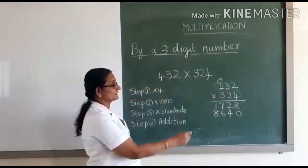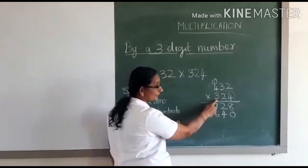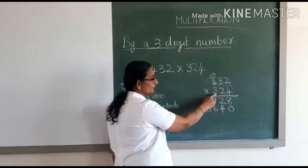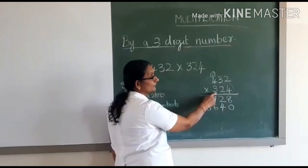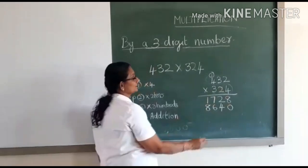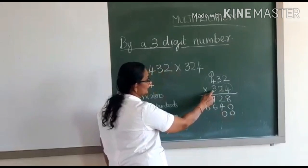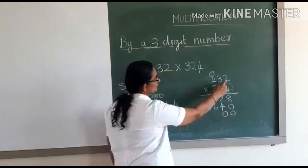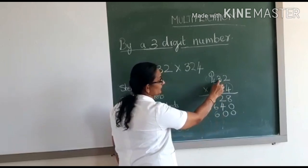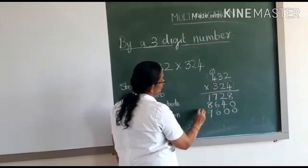The third step is to multiply the number with three. But three is in the hundreds place. When you multiply a number with hundreds, you know that the digit in the ones and tens place is always zero. So put two zeros here, and then multiply with three: three into two is six, three into three is nine, and three into four is ten.